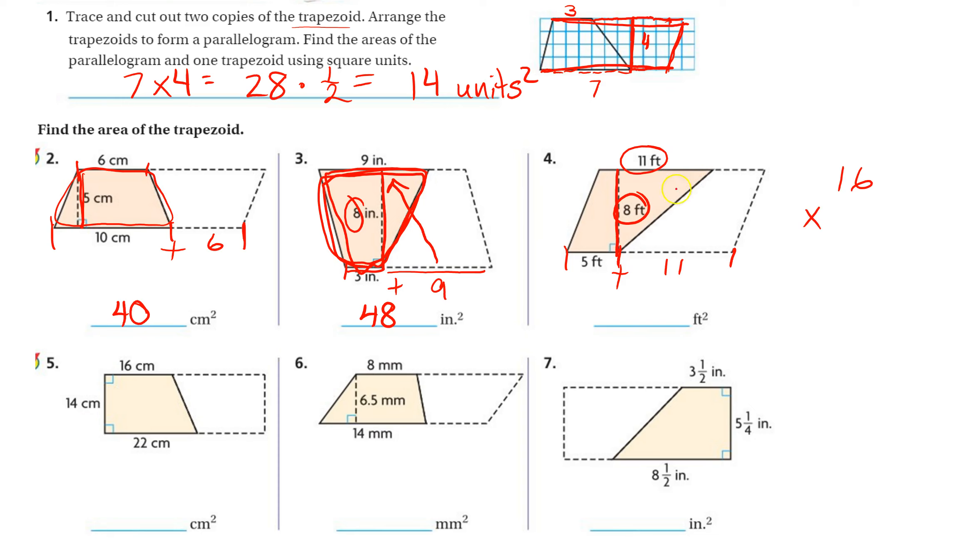So to find the area of this whole thing, we just do 16 times the 8. 8 times 6 is 48, 8 times 8 is 8, plus 4 is 12.